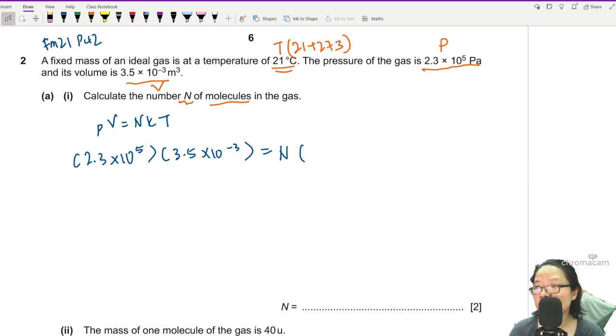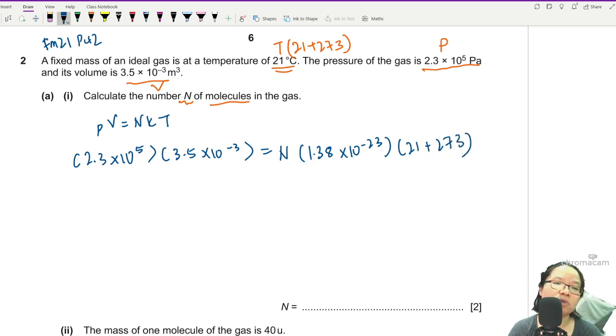Alright, I'm going to continue the discussion now. So the Boltzmann constant you can find from your table of constants is 1.38 times 10 to the power of negative 23, and the temperature will be 21 plus 273. You just press your calculator. Please use the button exponent and press carefully.